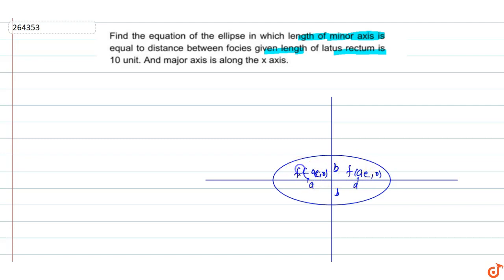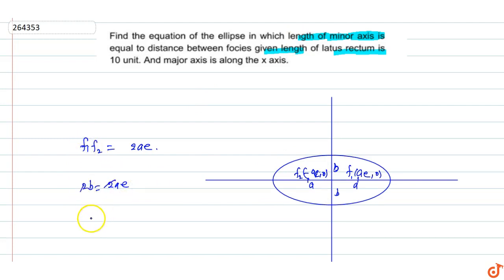So F1 and F2 are the foci, and the distance between the foci F1F2 equals 2ae. The length of the minor axis is 2b. Setting them equal: 2b = 2ae, so b = ae, meaning b/a = e. Now, eccentricity e satisfies e² = 1 − b²/a².